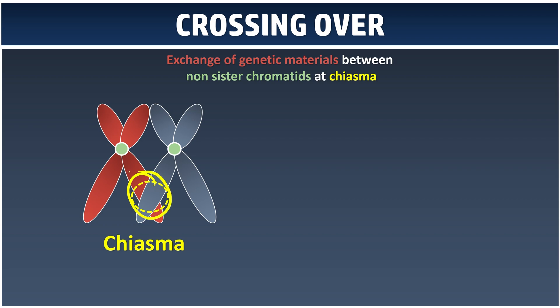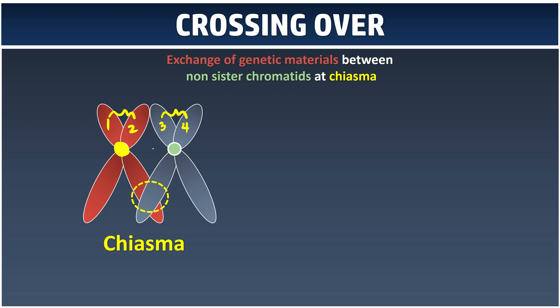This process must occur only between non-sister chromatids. Let's say the orange ones we call number one and two. One and two are sister chromatids because they are bound together at the same centromere — this is just like the same family. So we won't be able to get married between family members. Number three and four are also the same family, so they won't be able to cross over with their own family. This is why they need to cross over with other people. So two and three are considered as non-sister, which is why crossing over between them is possible.